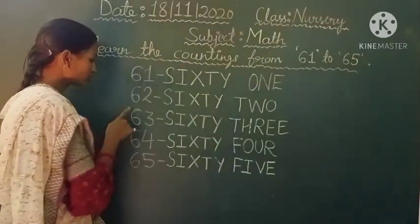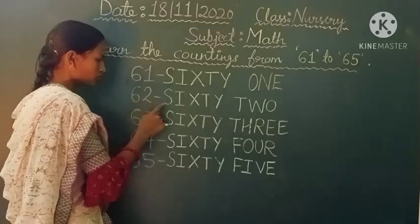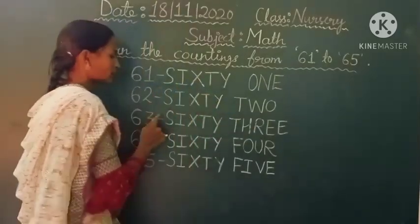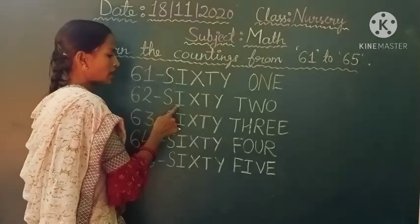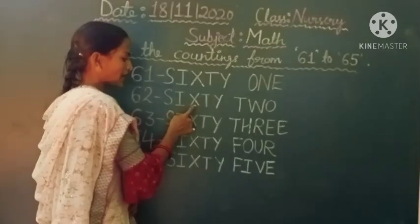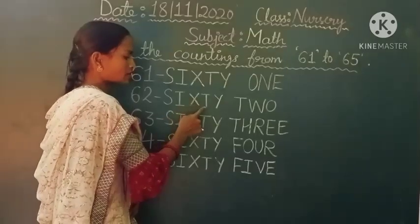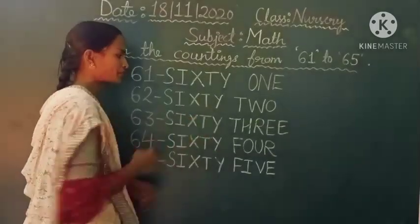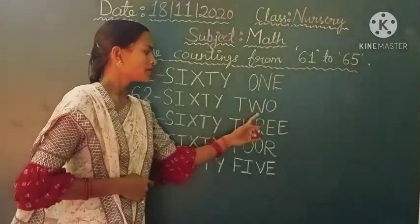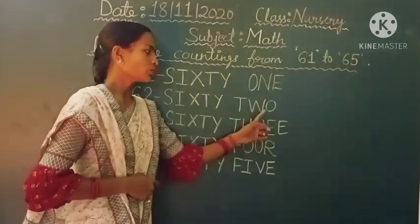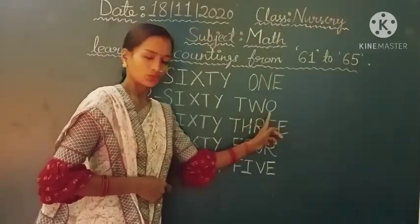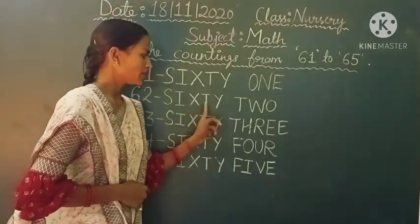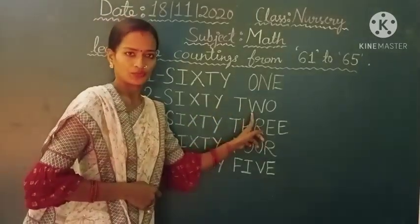Next is 62. 62. S-I-X-T-Y. 60. T-W-O. 2. 62. 62. Okay students.